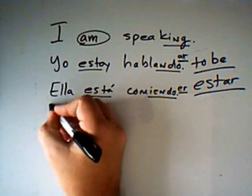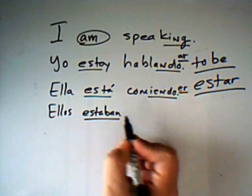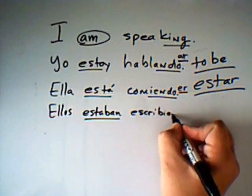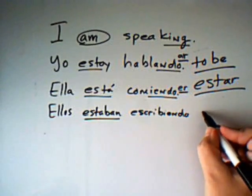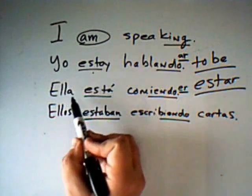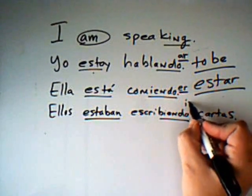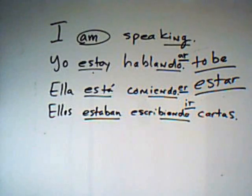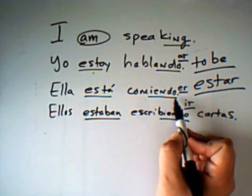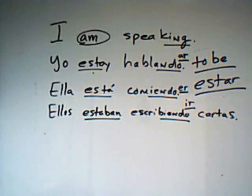Our last example was 'they were writing letters' in the past. Ellos estaban — a form of the verb estar in the past, which is actually the imperfect tense — escribiendo cartas. So in these examples we can see a form of estar: yo estoy, ella está, ellos estaban, and then an -ando ending or a -yendo ending. Escribir is an IR verb, so if we have an ER verb or an IR verb, the equivalent of the present participle -ing is -yendo (I-E-N-D-O). This is just an overview so you can see the parallels between English and Spanish with this auxiliary 'to be.'